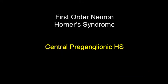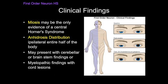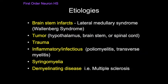Looking at first-order neuron Horner syndrome — central preganglionic — this occurs with lesions anywhere from the hypothalamus down to C8-T2. It is the least common location for preganglionic Horner syndrome. Clinically these patients may present with miosis as the only evidence of central Horner syndrome, along with ipsilateral anhidrosis to the entire half of the body and possibly cerebellar, brainstem, or myelopathic findings. Wallenberg syndrome, or lateral medullary infarct, is the most common cause of first-order neuron Horner syndrome, secondary to occlusion of PICA or the vertebral artery, producing an infarct in the region where sympathetic fibers travel.